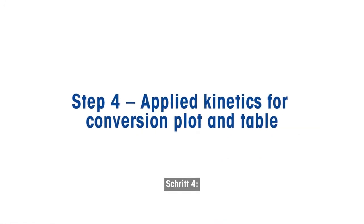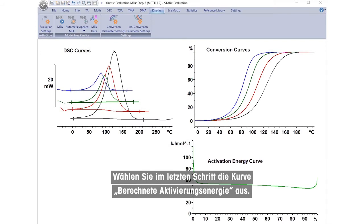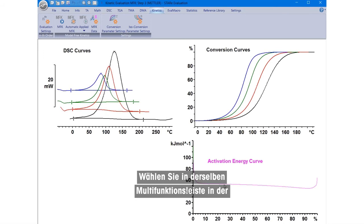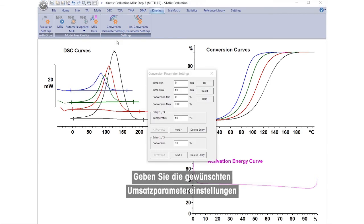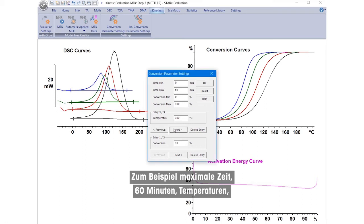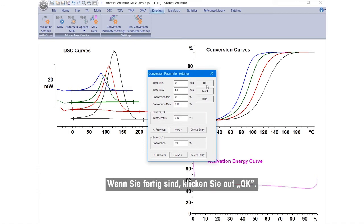Step 4. In the last step, select the calculated activation energy curve. In the same ribbon bar, select Conversion Parameter Settings from the Settings group. Specify the desired conversion parameter settings in the pop-up window's entry fields. For example, maximum time, 60 minutes. Temperatures, 60, 80, and 100 degrees Celsius. Conversion, 10%, 60%, and 90%. When finished, click OK.